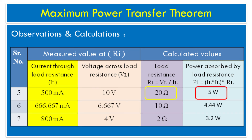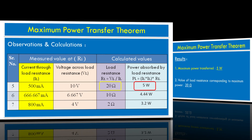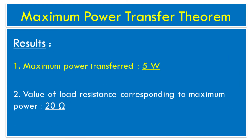For the seven sets of values of load resistor RL, we measured the current flowing through the resistor as IL and the voltage across load resistor RL. We calculated load resistance as RL equal to VL divided by IL, and also measured the power absorbed by the load resistance using the formula IL squared multiplied by RL.